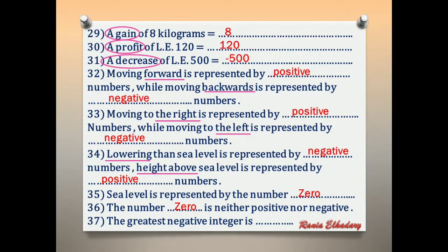Number 37: the greatest negative integer. The negative integers are negative 1, negative 2, negative 3 and so on. The greatest negative number is negative 1.